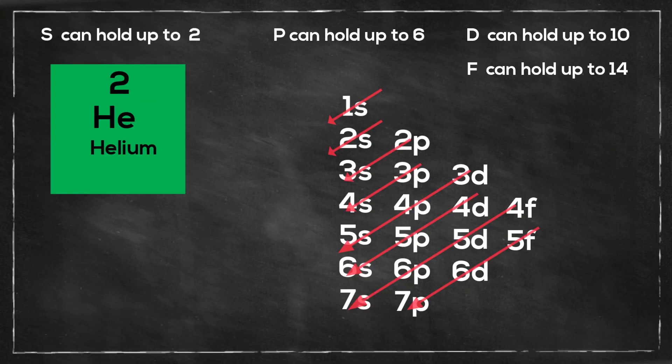So let's get started with helium. Helium is 1s2 and you have two electrons per shell.